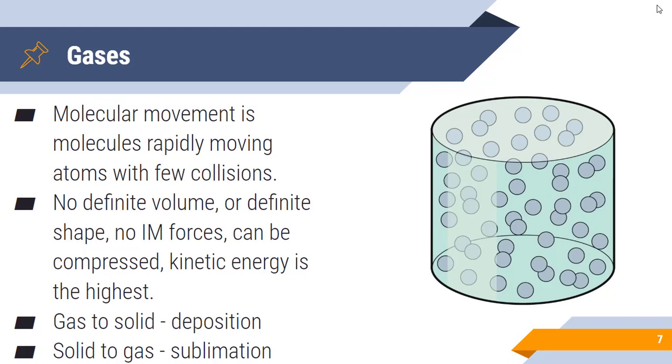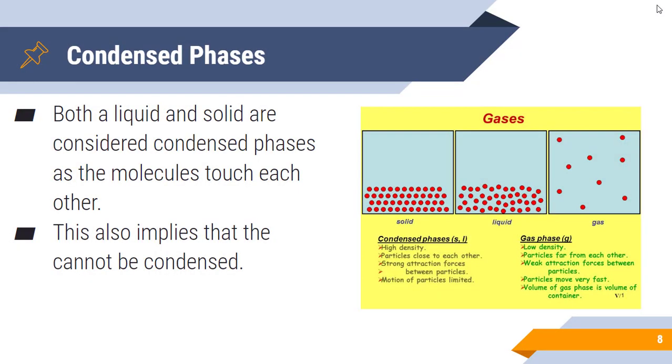The last two phase changes are gas to solid, which is deposition, and solid to gas, which is sublimation. You saw this when I played with the carbon dioxide, the dry ice, earlier this year. One last thing: liquid and solid are considered condensed phases because the molecules touch each other. Both of these exhibit similar properties - high intermolecular forces. Gases are very far apart, not a condensed phase. They have very low density, particles are very far apart, and they have very weak attraction and move very quickly. Gases can be condensed. Condensed phases cannot be condensed anymore because they're already condensed.